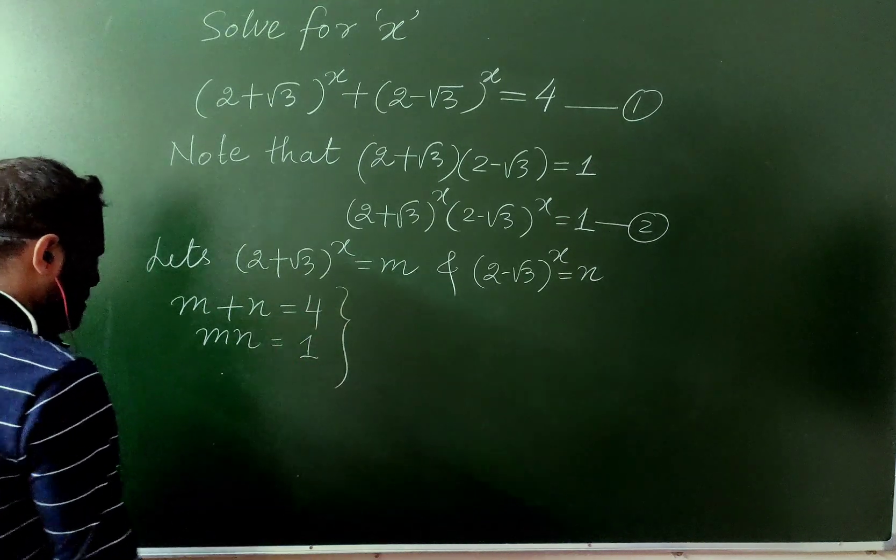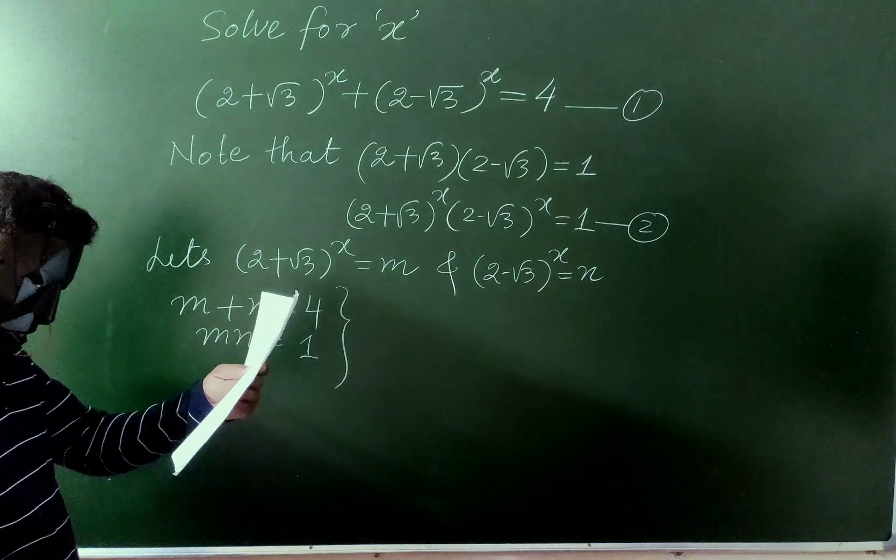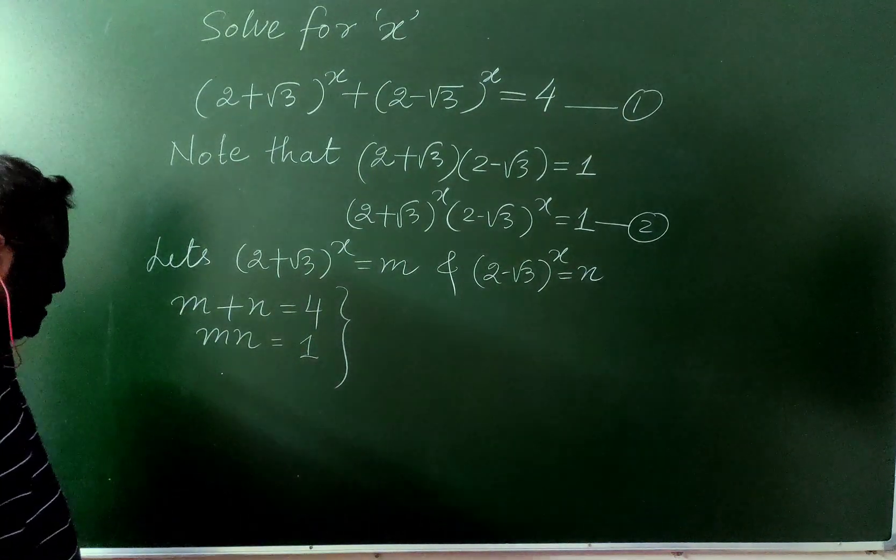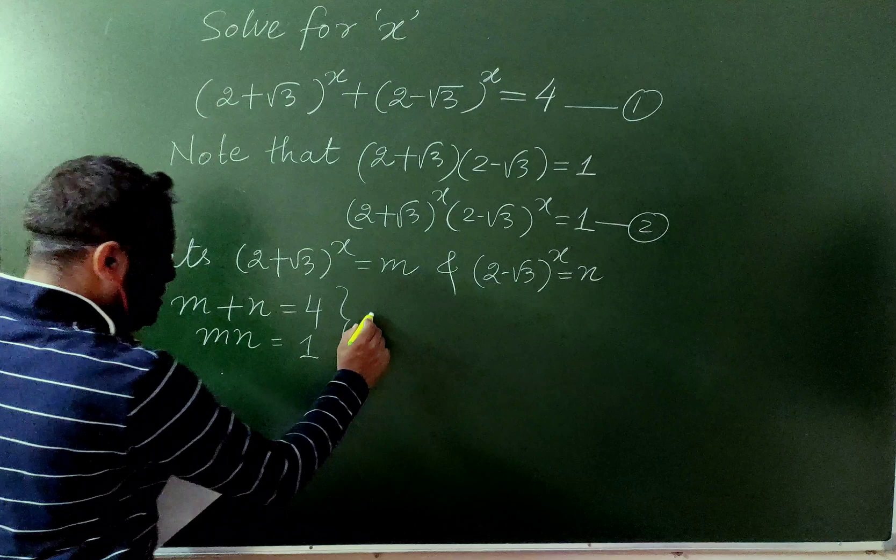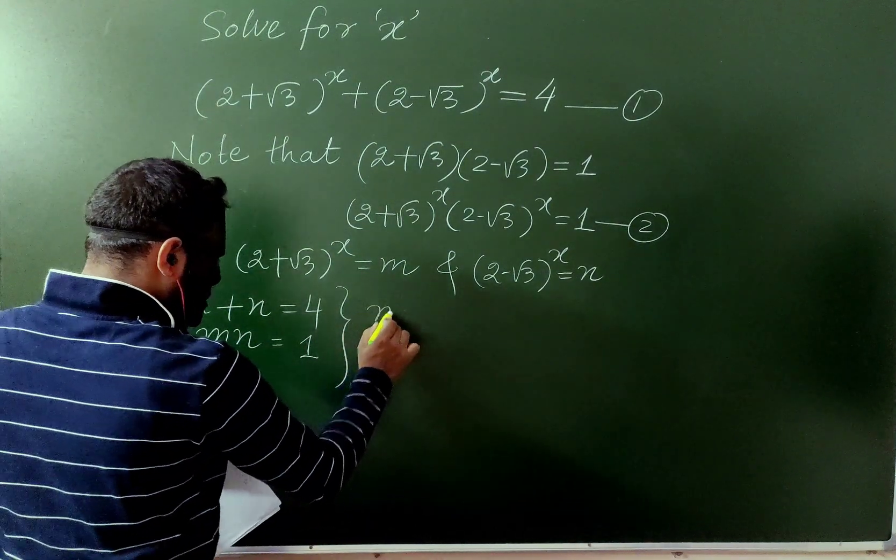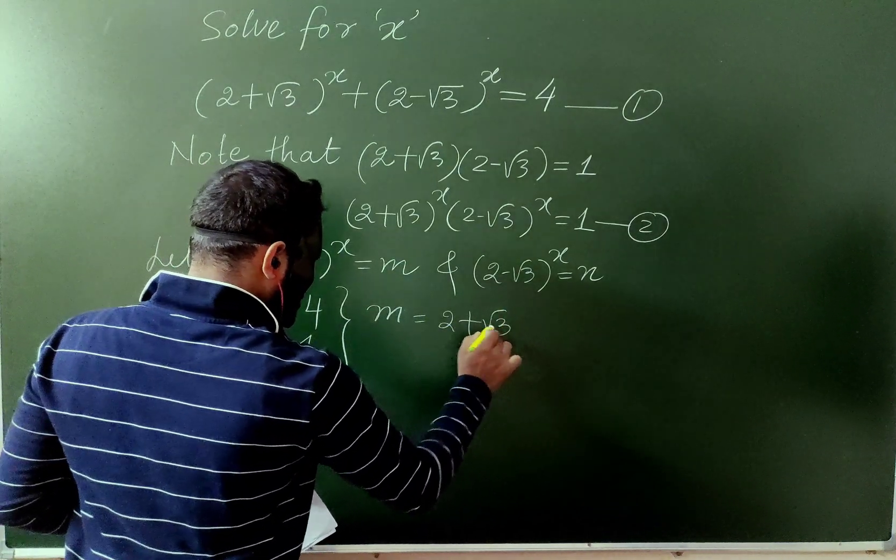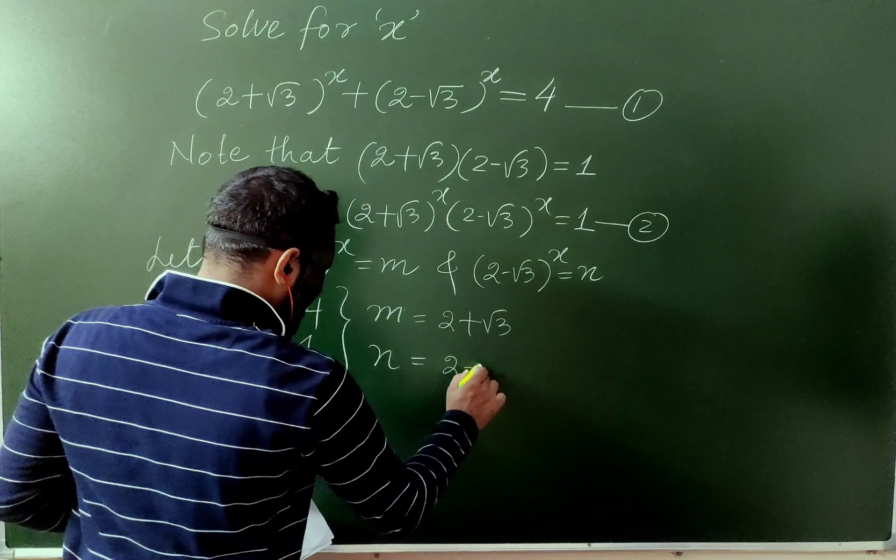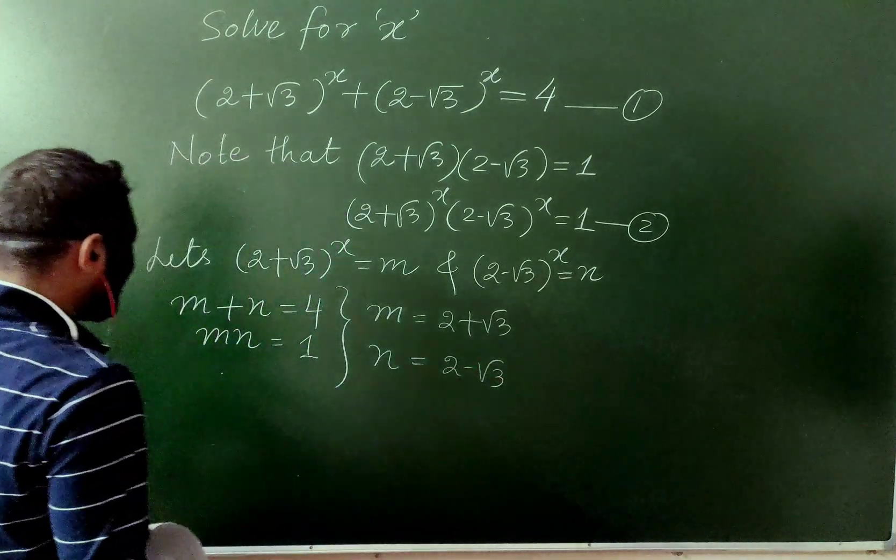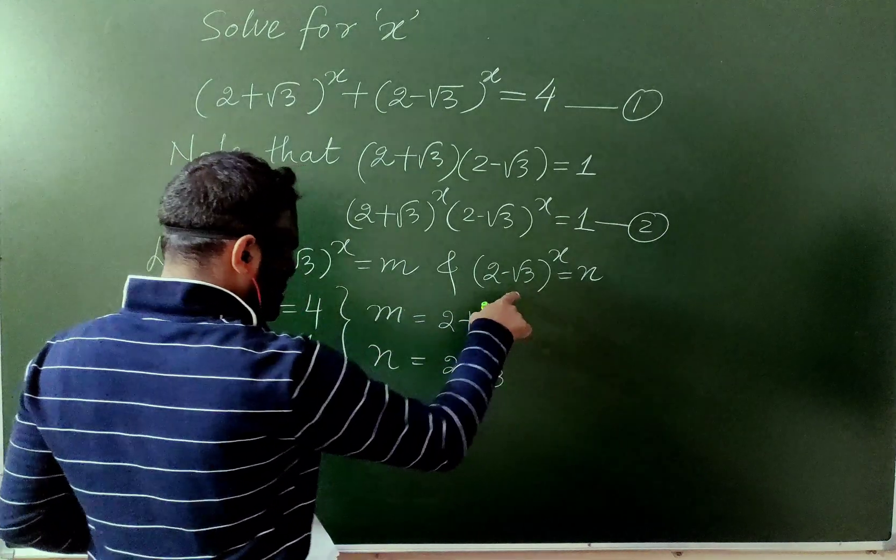If you solve this one, what we will actually get here is, if you solve the system of equations, which is very easy, you get m equals 2 plus root 3 and n equals 2 minus root 3. But remember that we have taken m equals this one and n equals this one.